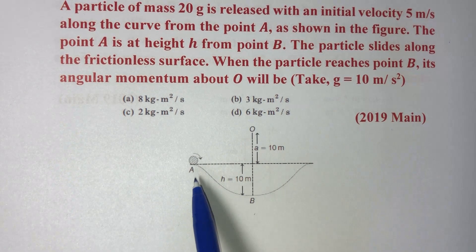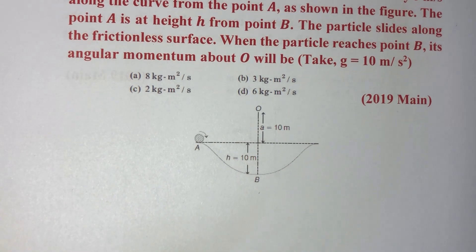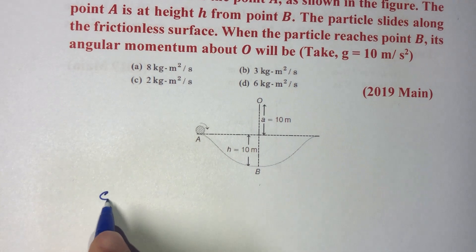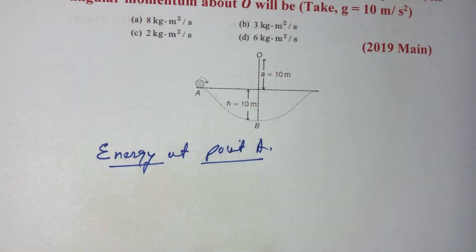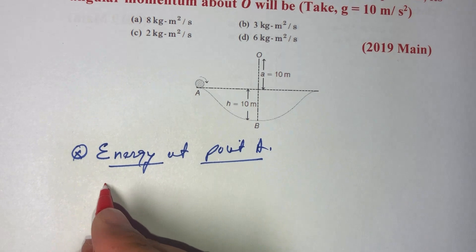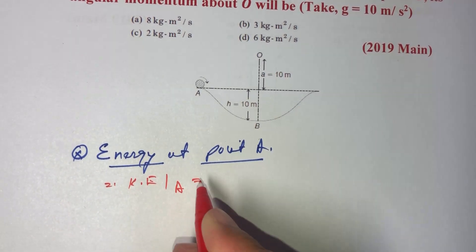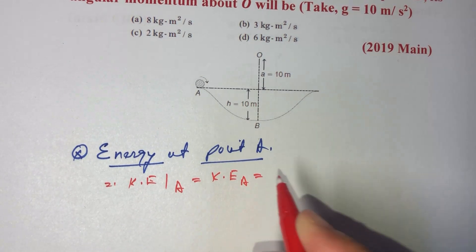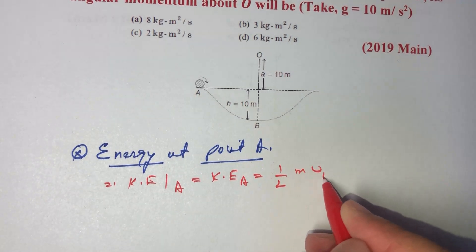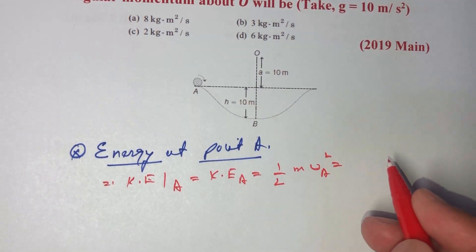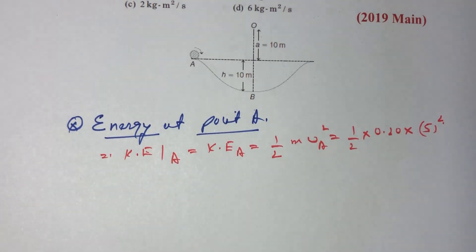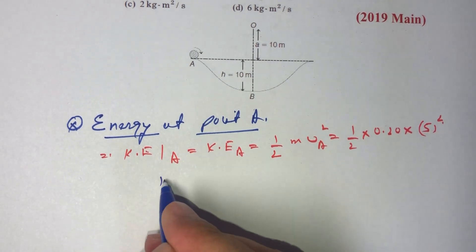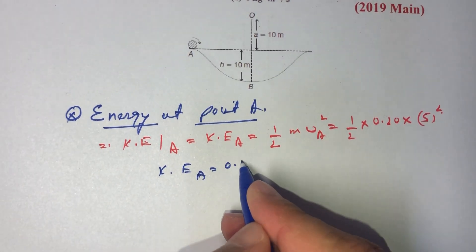First, we are going to use conservation of energy to find the velocity at point B. Energy at point A has two components: kinetic as well as potential, because the particle is given an initial velocity of 5 m/s. Kinetic energy at A equals half m v_a squared, which is half times 0.20 times 5 squared, giving kinetic energy at A equal to 0.25 joules.